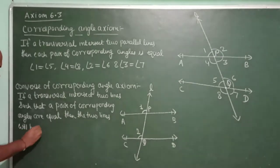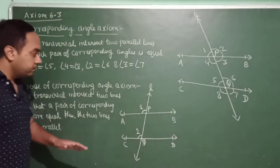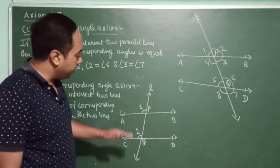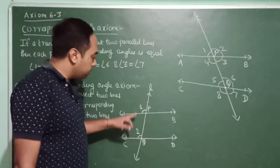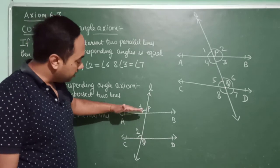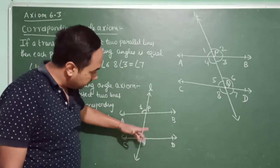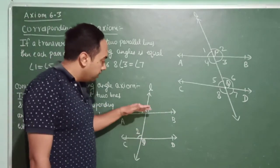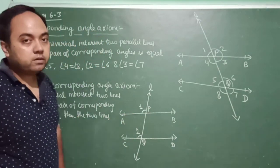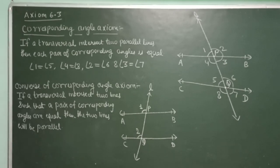Then the two lines will be parallel. If you have a condition that two lines are intersected by a transversal and a pair of corresponding angles is equal, then we can directly say that the lines containing these two angles will be parallel. So, we have studied Corresponding Angle Axiom and its Converse. Please note it down. Thank you.